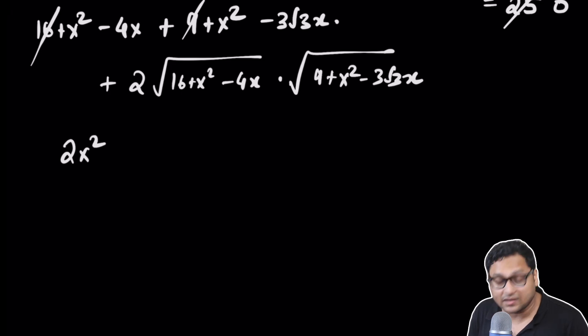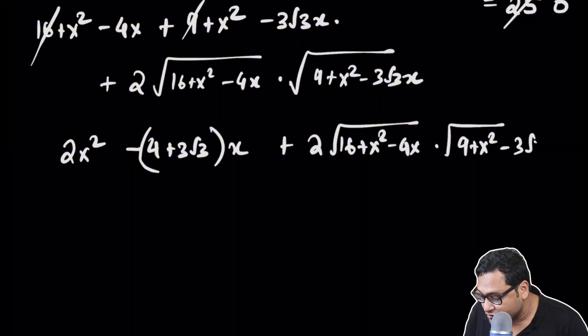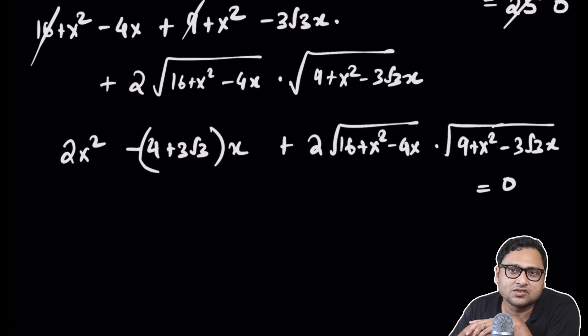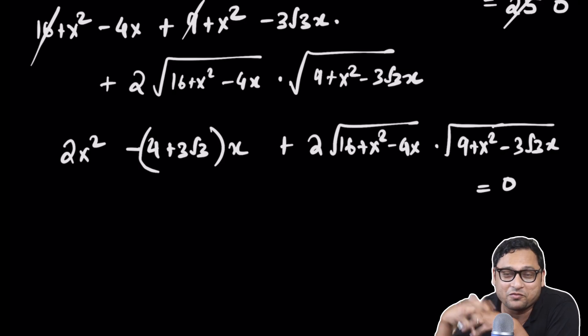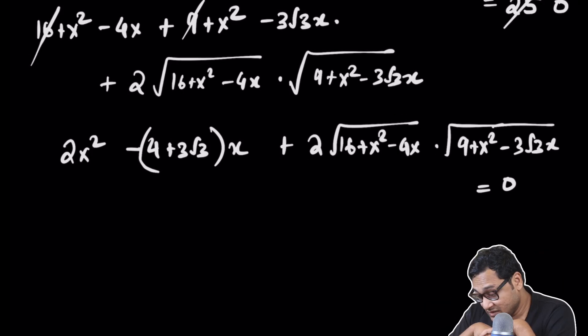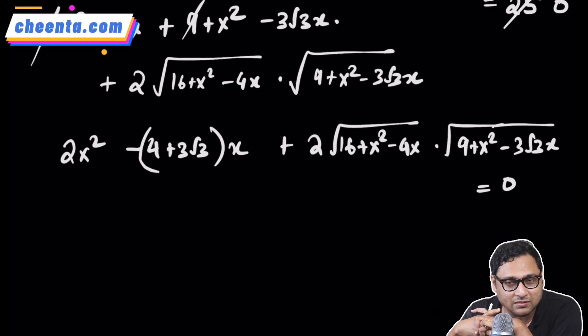What do I have? I have 2X squared on the left hand side, minus X times (4 plus 3 root 3), plus 2 times (16 plus X squared minus 4X) times (9 plus X squared minus 3 root 3X). This is equal to 0. We are almost done because we will have to just take one of the pieces to the other side and square both sides to get rid of the square root sign again and then solve for X. We know how fun it is to solve a bi-quadratic, a fourth power of X equation. There is a formula but it's too complicated. Clearly this is not the right way to do this problem, or at least not the most fun way.